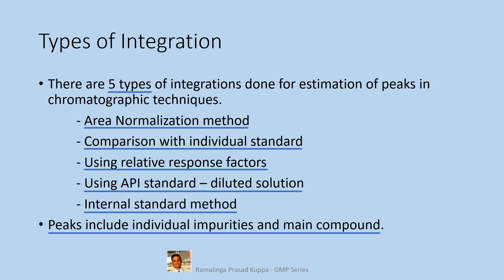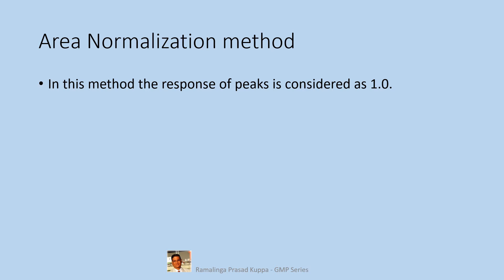Peaks include individual impurities and the main compound. Area normalization method: in this method, the response of peaks is considered as 1. This must be understood that the area counts per unit concentration for any peak is considered as 1.